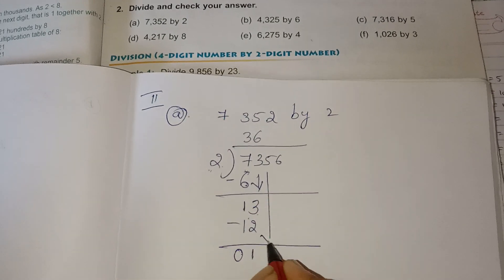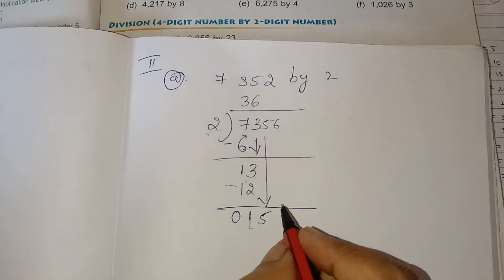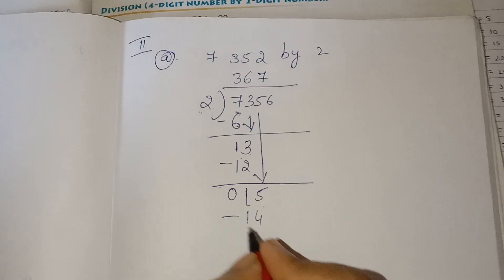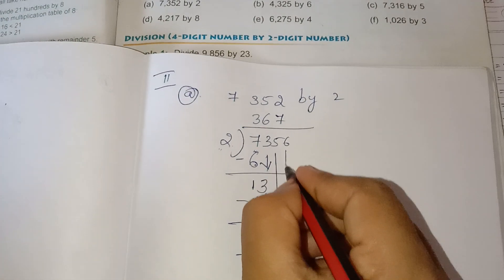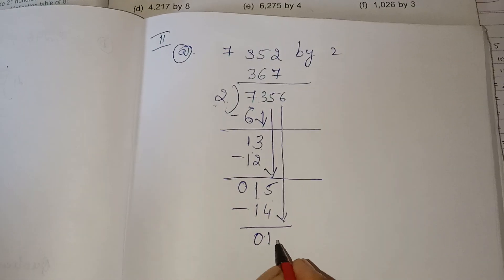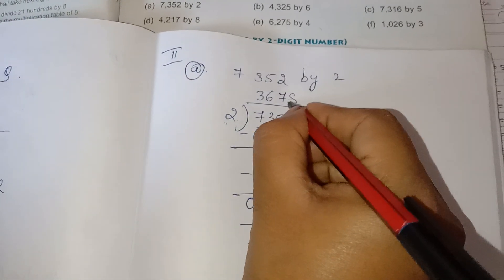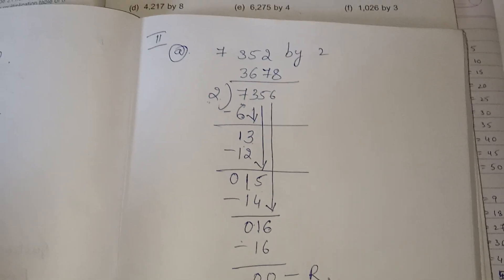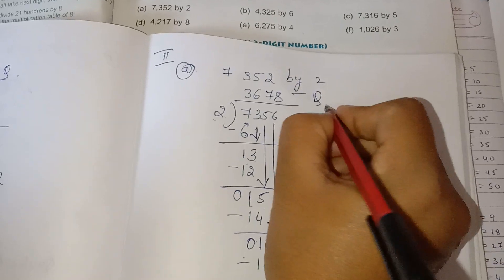Take the next number down: 15. 2 sevens are 14. 15 minus 14 is 1. Take the next number down: 16. 2 eights are 16. The remainder is 0. The quotient is 3678.